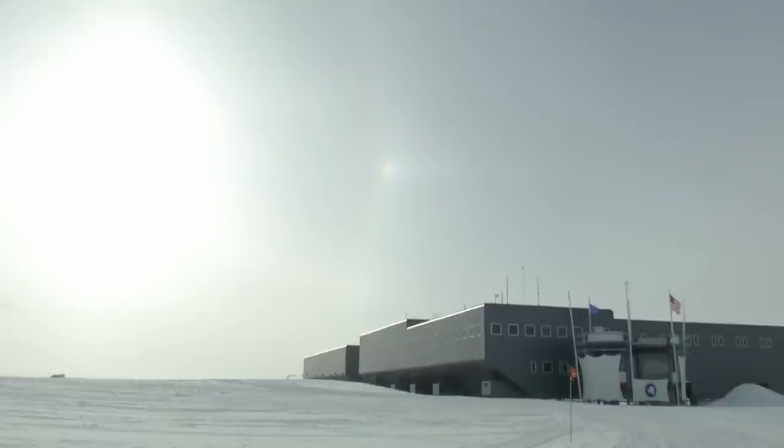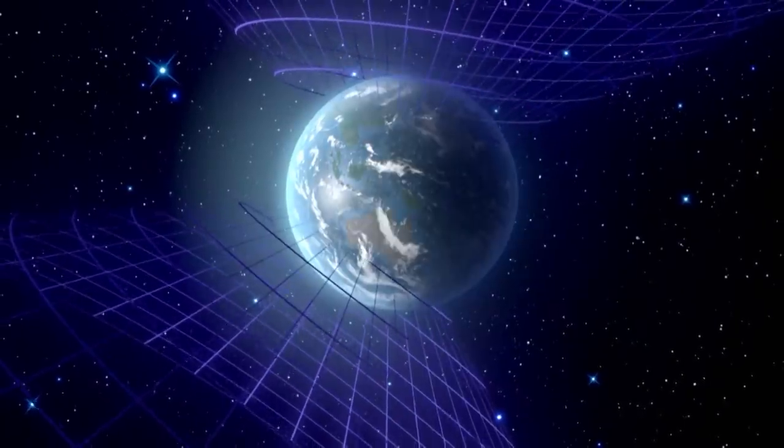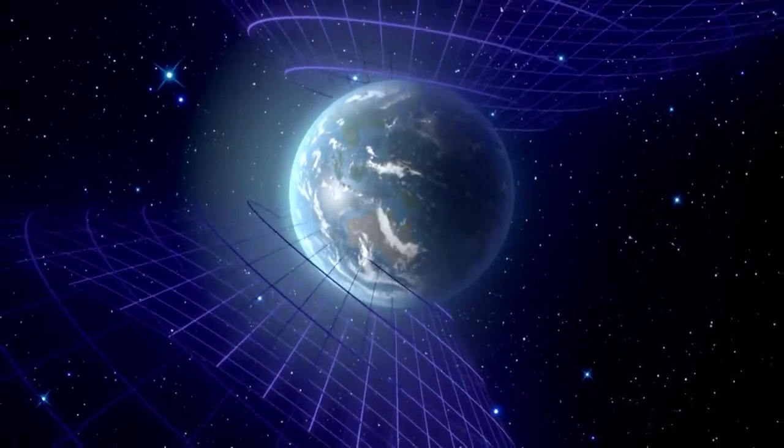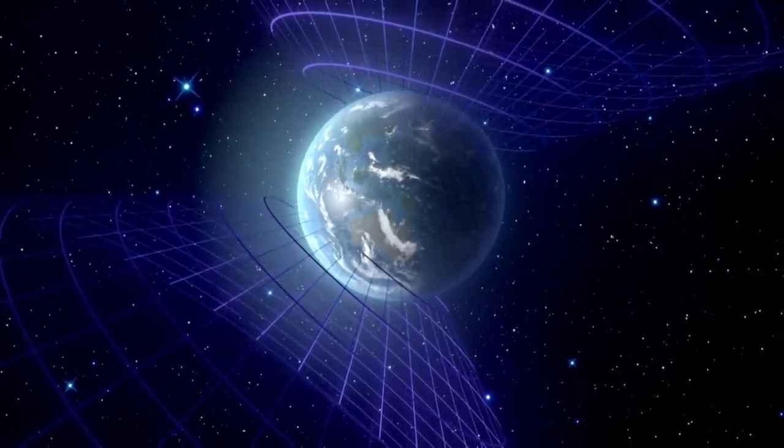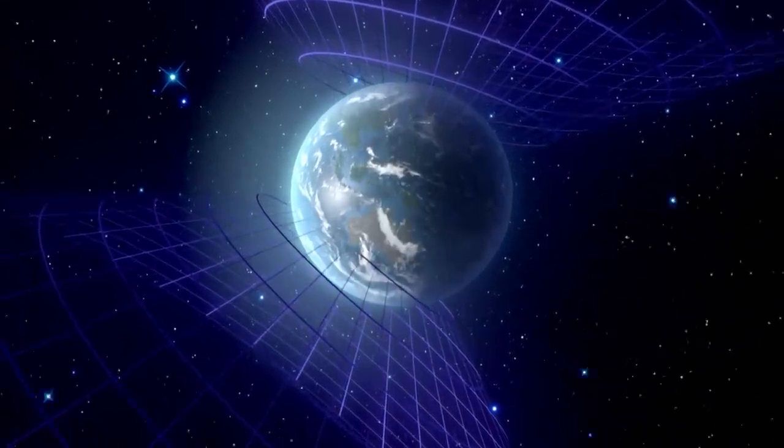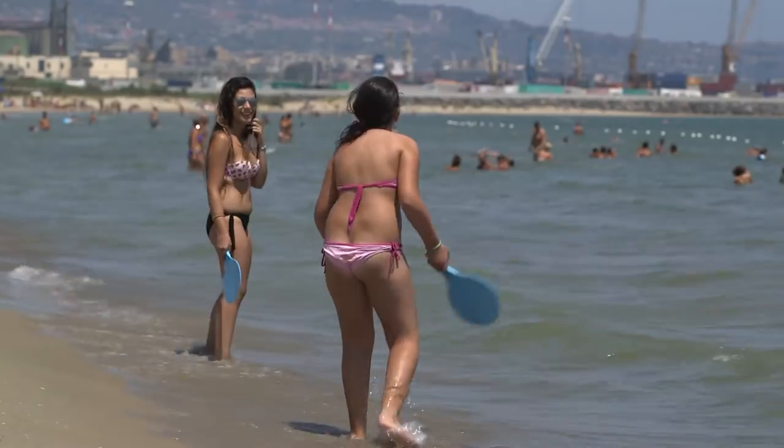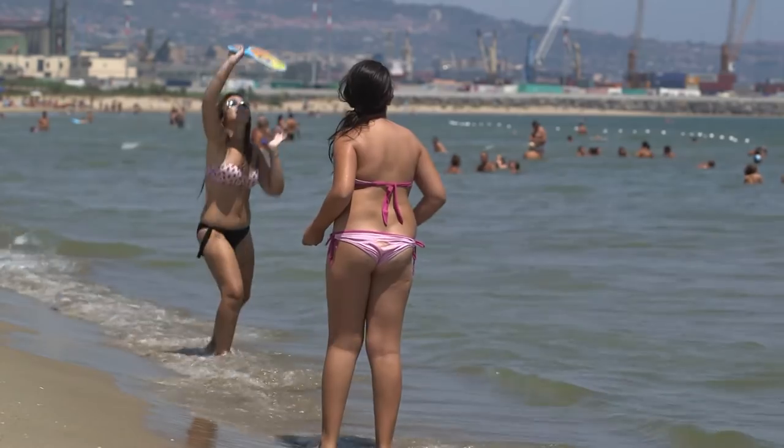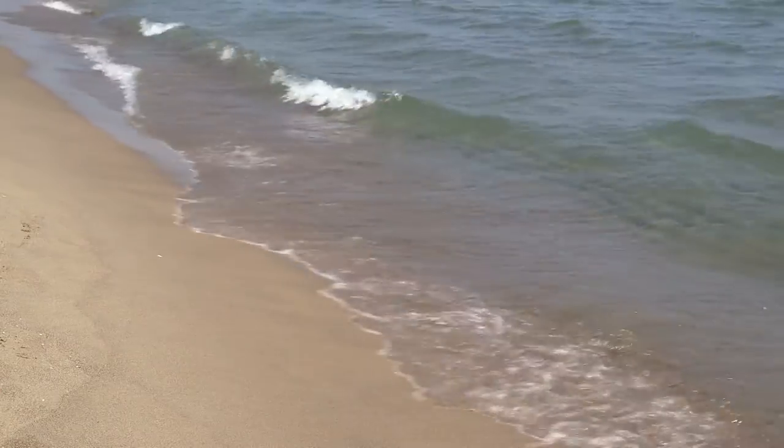IceCube is searching for neutrinos that have flown through the Earth - ones that entered the northern hemisphere. Ones that entered the southern hemisphere are looked for in the Mediterranean, for only neutrinos can fly through the Earth.